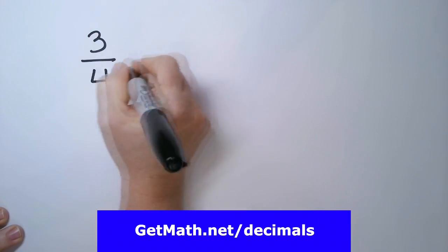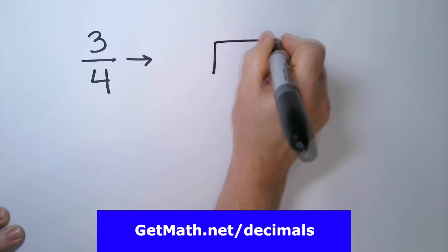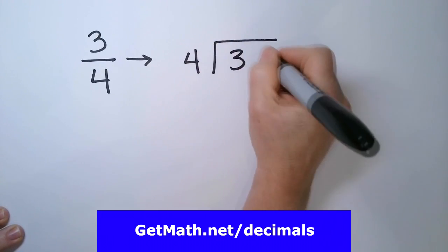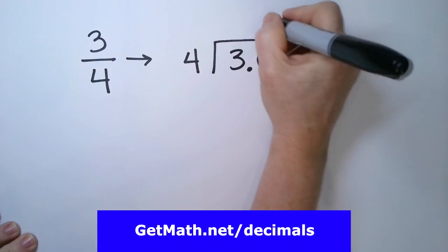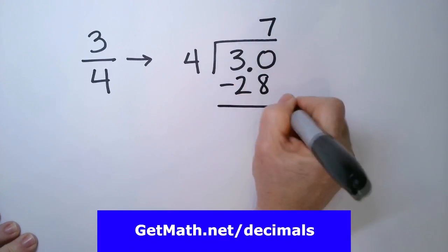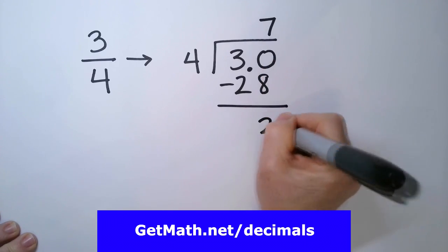How about 3 quarters? So the 3 goes here, 4 goes here. I'm going to add a 0. So 4 goes into 30 seven times minus 28. And so I've got a difference of 2.